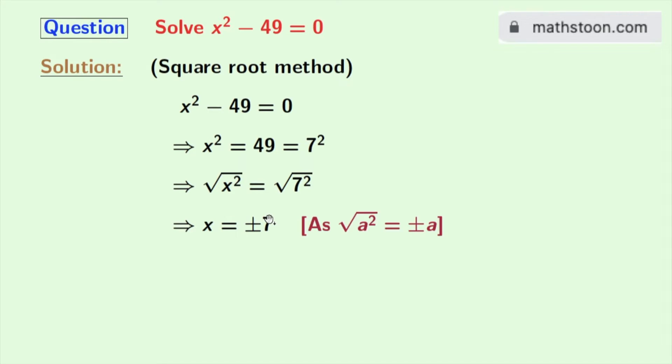As we know that square root of a squared is equal to plus minus a. Here a is 7. So x is equal to 7 and minus 7 are the solutions of the equation x squared minus 49 is equal to 0.